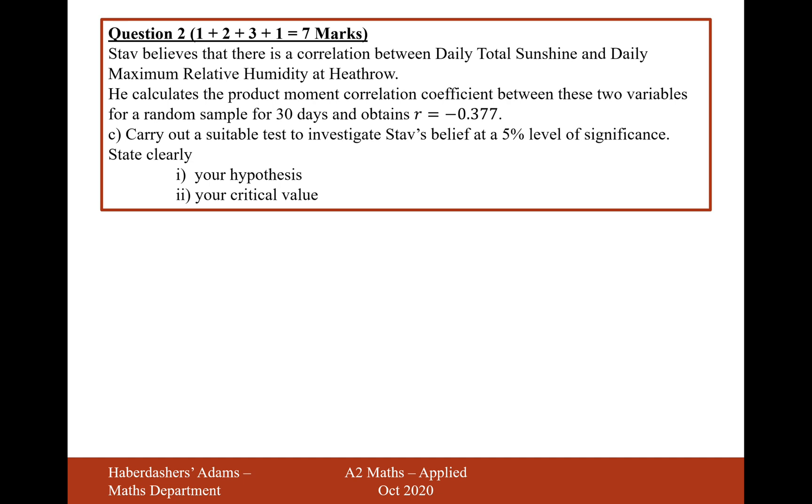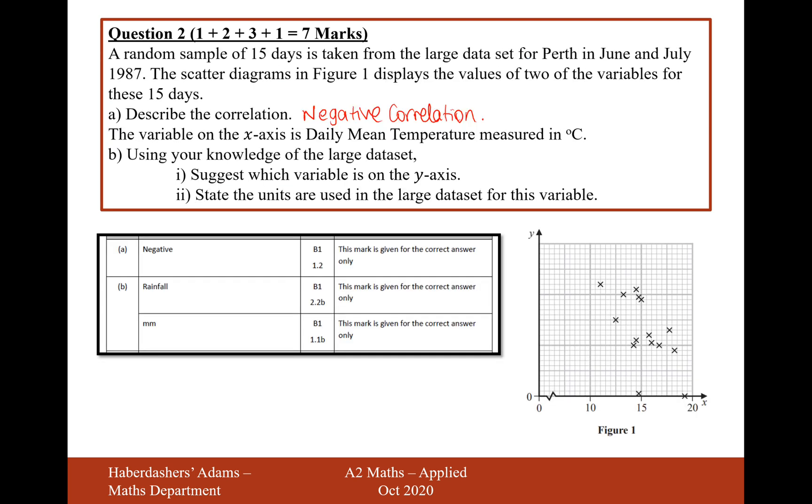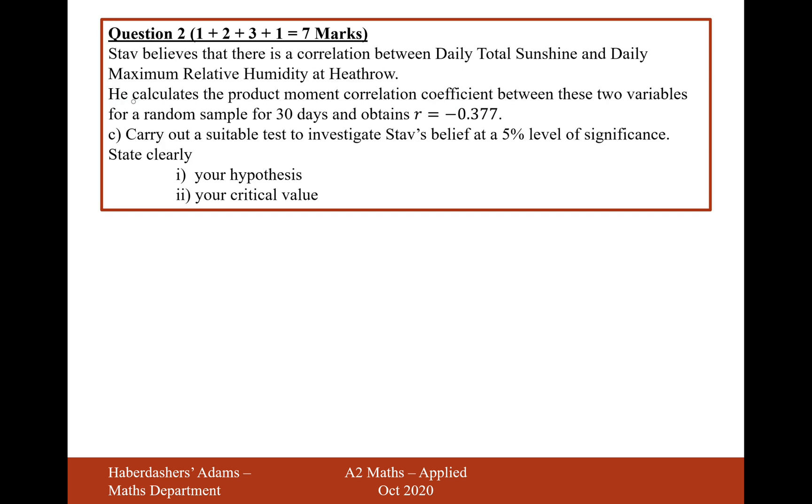Okay, let's move on to part C now. Stav believes that there is a correlation between daily total sunshine and daily maximum relative humidity at Heathrow. So that is a different set of variables in a different place to the graph that we've just seen, so don't get drawn in the fact that this is negative correlation. We're going to read the question. He calculates the product moment correlation coefficient between these two variables in a random sample of 30 days, and obtains r is equal to minus 0.377.